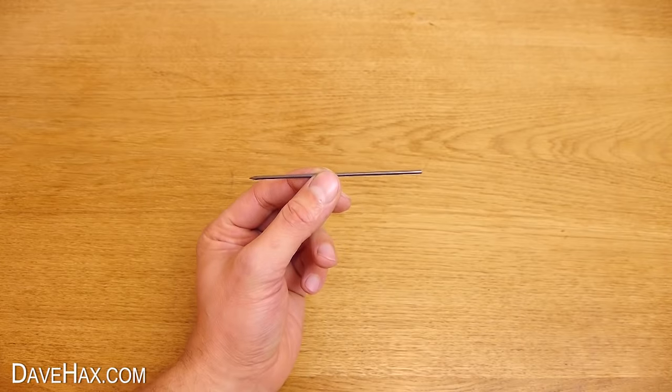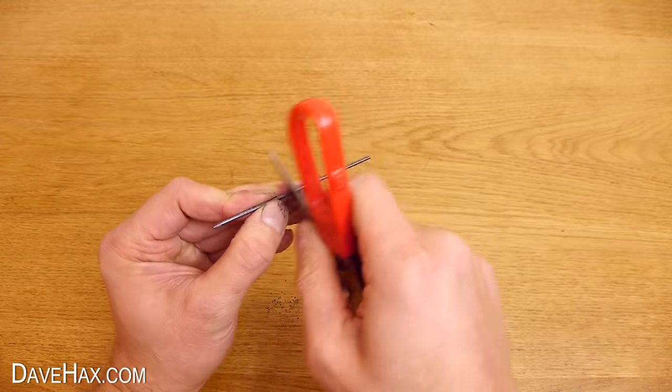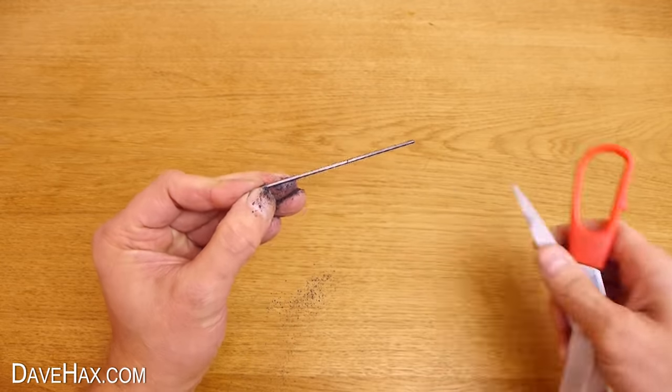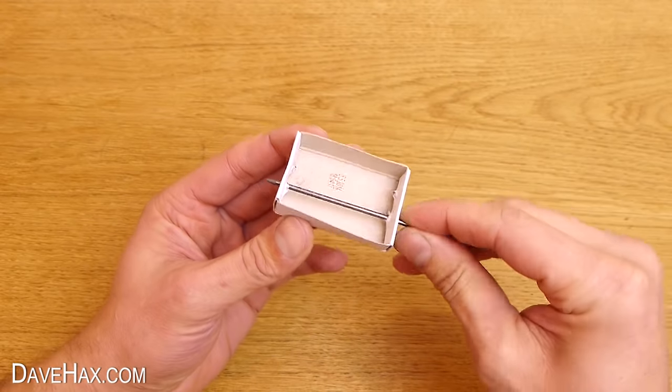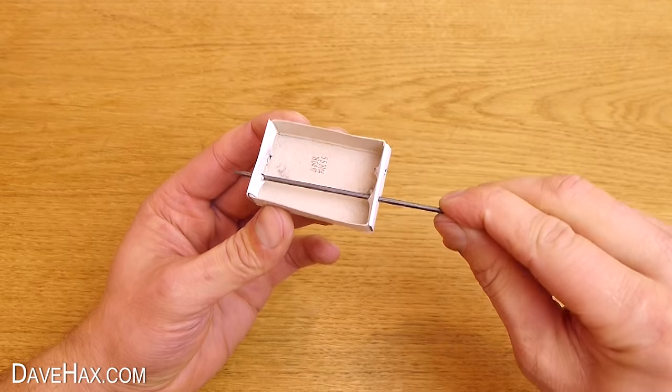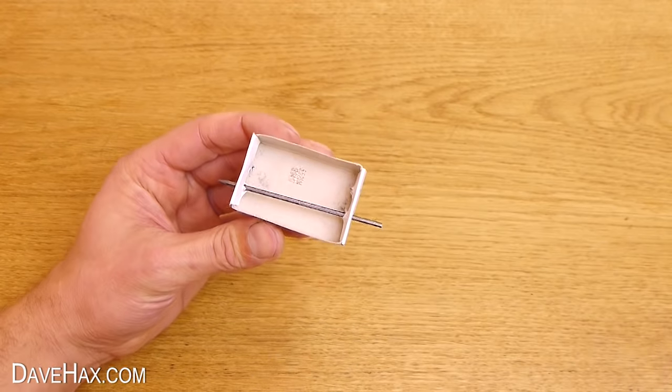Next, take a length of lead, then using an open pair of scissors, carefully scratch a flat spot all the way along. Then, poke it through the holes in your matchbox, like this. Twist it so the flat spot is at the top, then snap it off so you've got about one centimeter sticking out of each end.